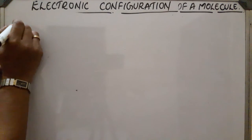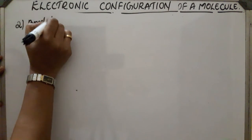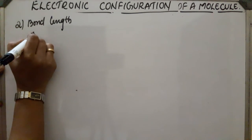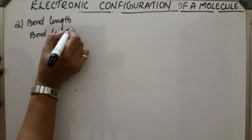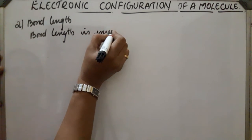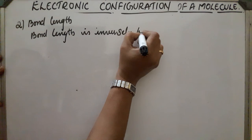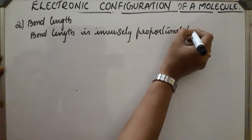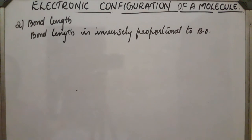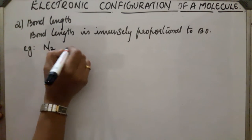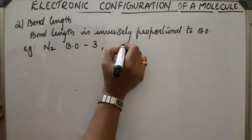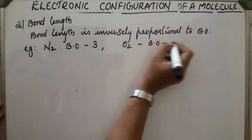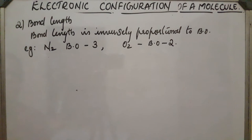The second parameter is bond length. Bond length is inversely proportional to bond order. As greater the bond order, the bond length will be less. For example, in the case of N2, bond order is 3, and O2, bond order is 2. That means the bond length of O2 is greater than N2.